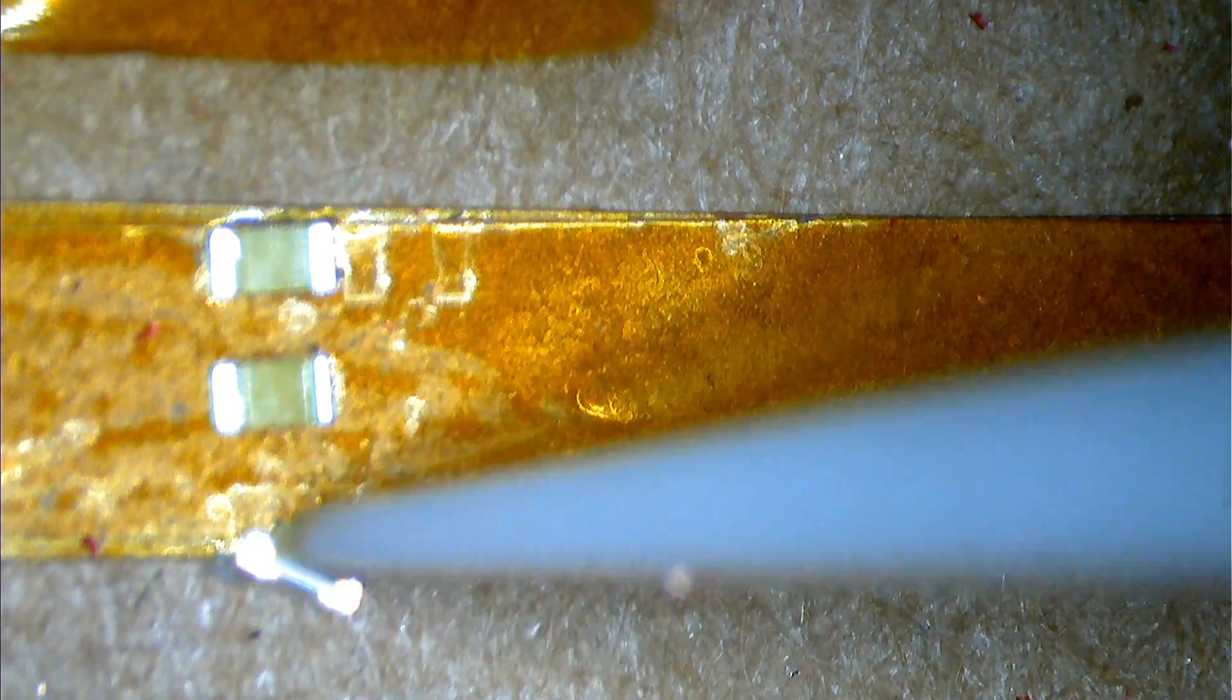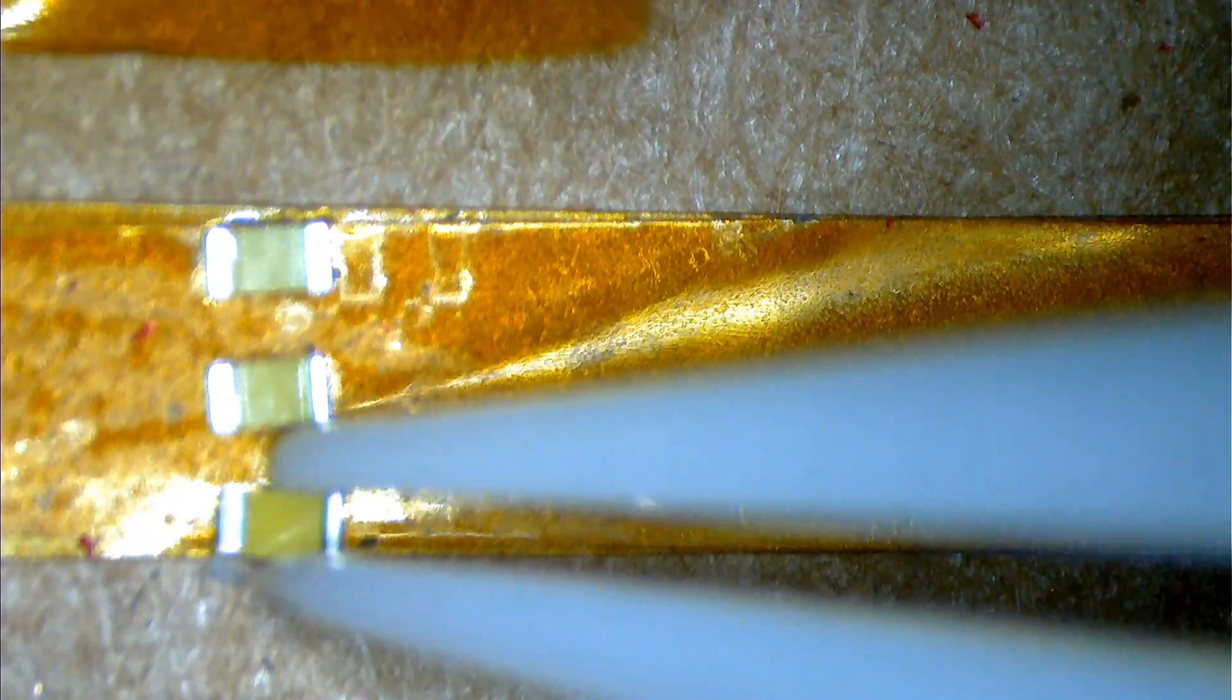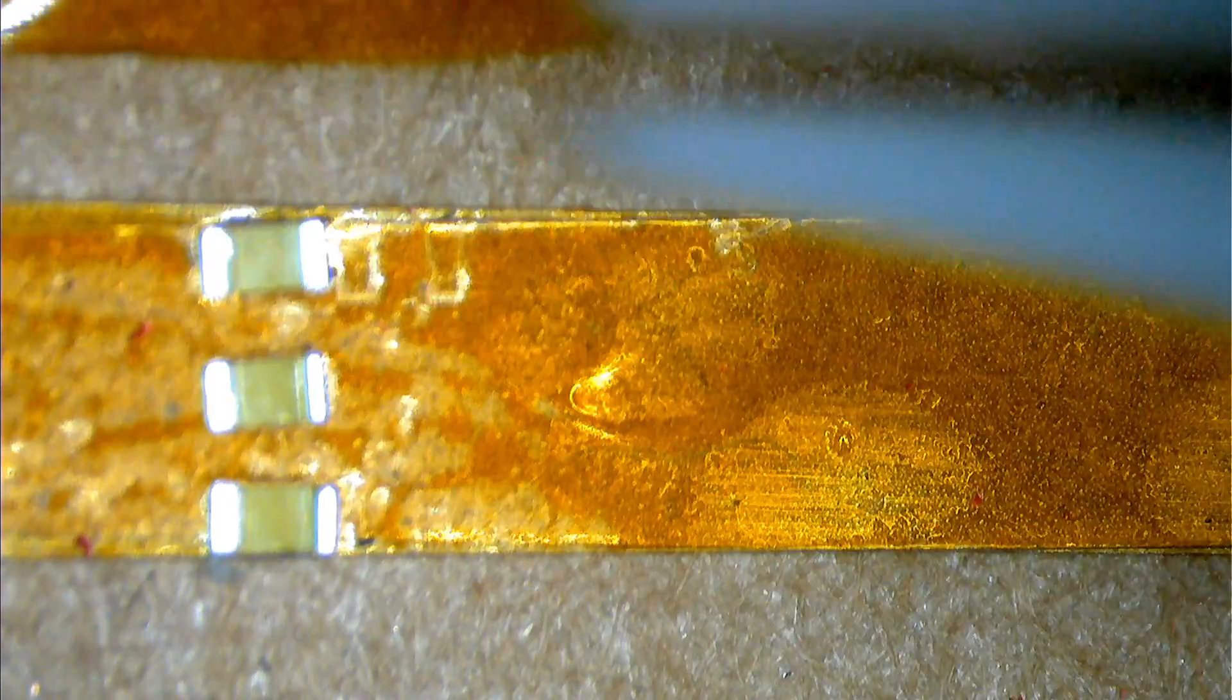Now I'm putting down some Kapton tape. This way I have something to hold the LEDs in place, provided I have all of the polarities in the same direction, to solder these in parallel.